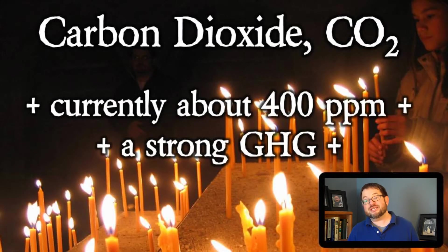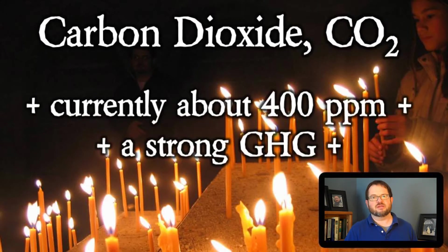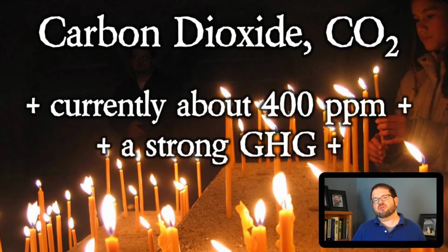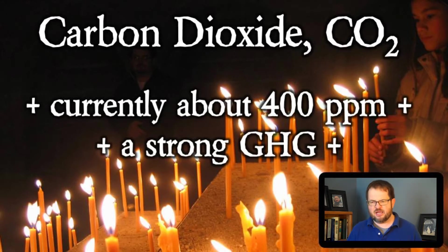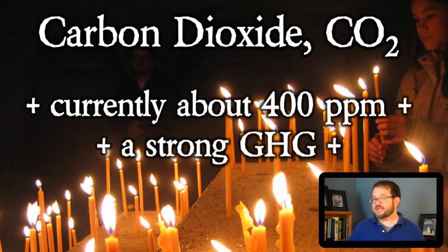Carbon dioxide, CO2 — one carbon atom and two oxygen atoms hooked together. At the present time, the concentration of carbon dioxide in the Earth's atmosphere runs right around 400 ppm, or parts per million. So if you had a million air molecules and could sort them out and count them, 400 of them would be carbon dioxide molecules. That's not a lot — carbon dioxide is a trace gas — but it is a very strong greenhouse gas.